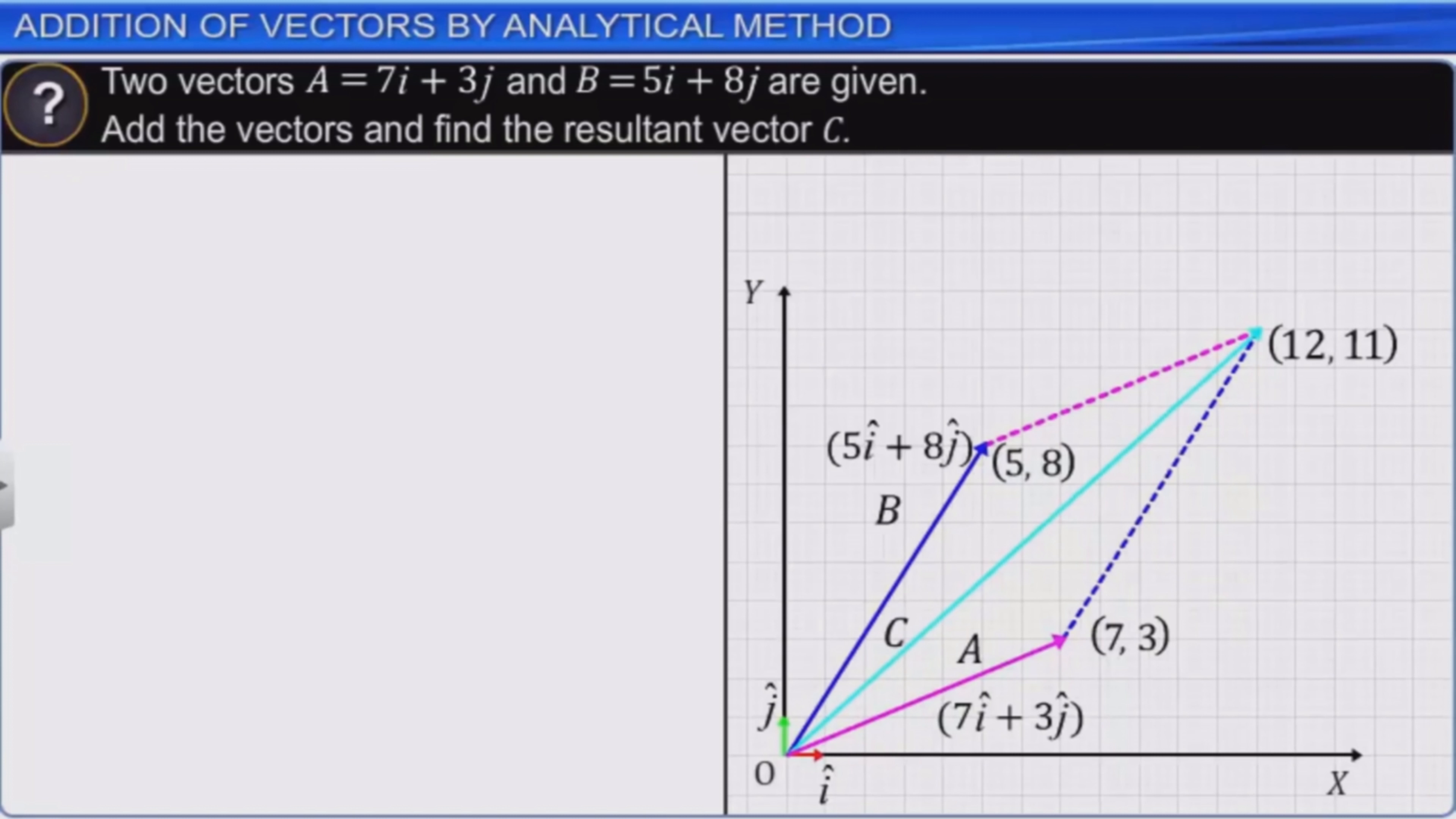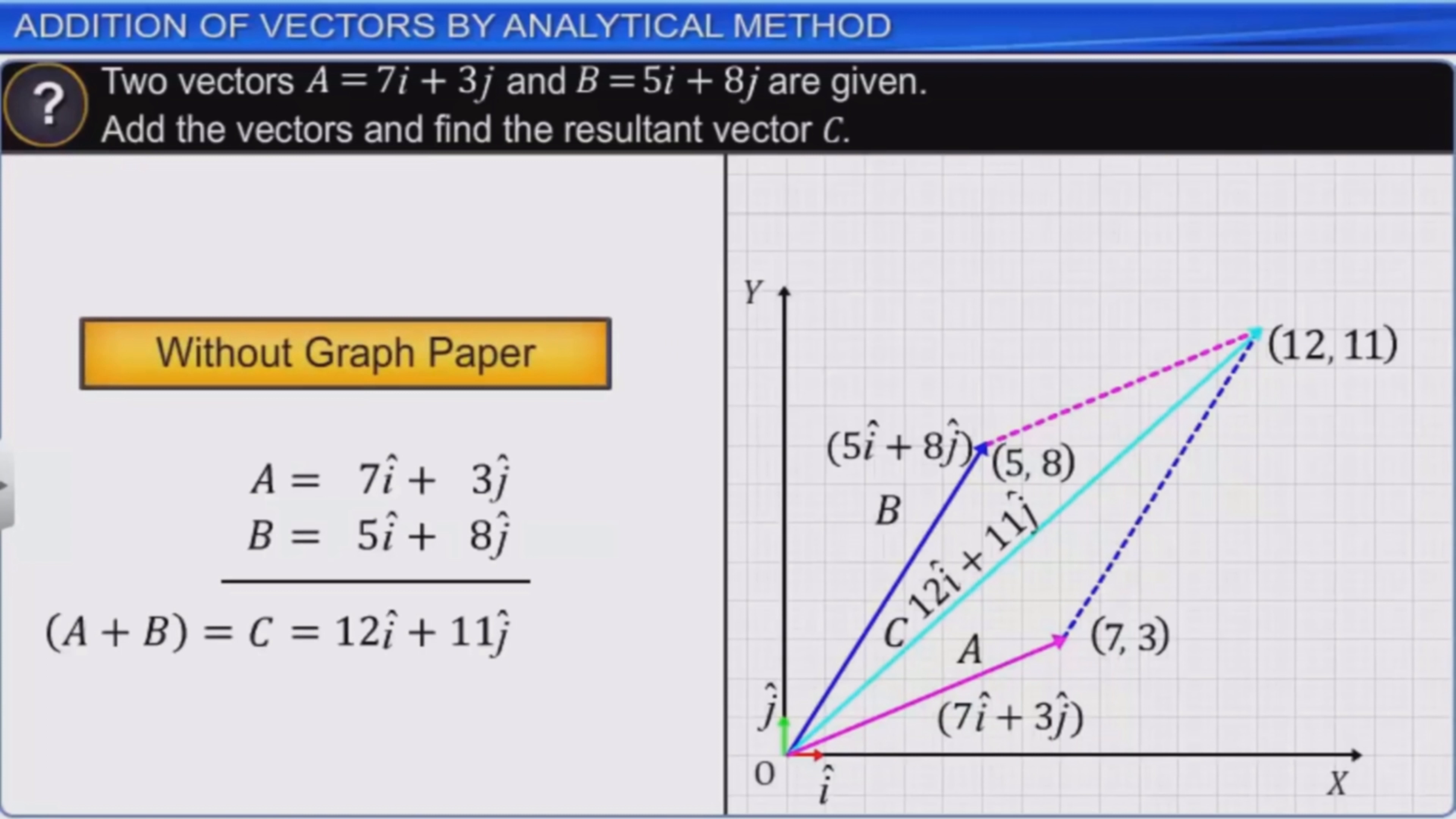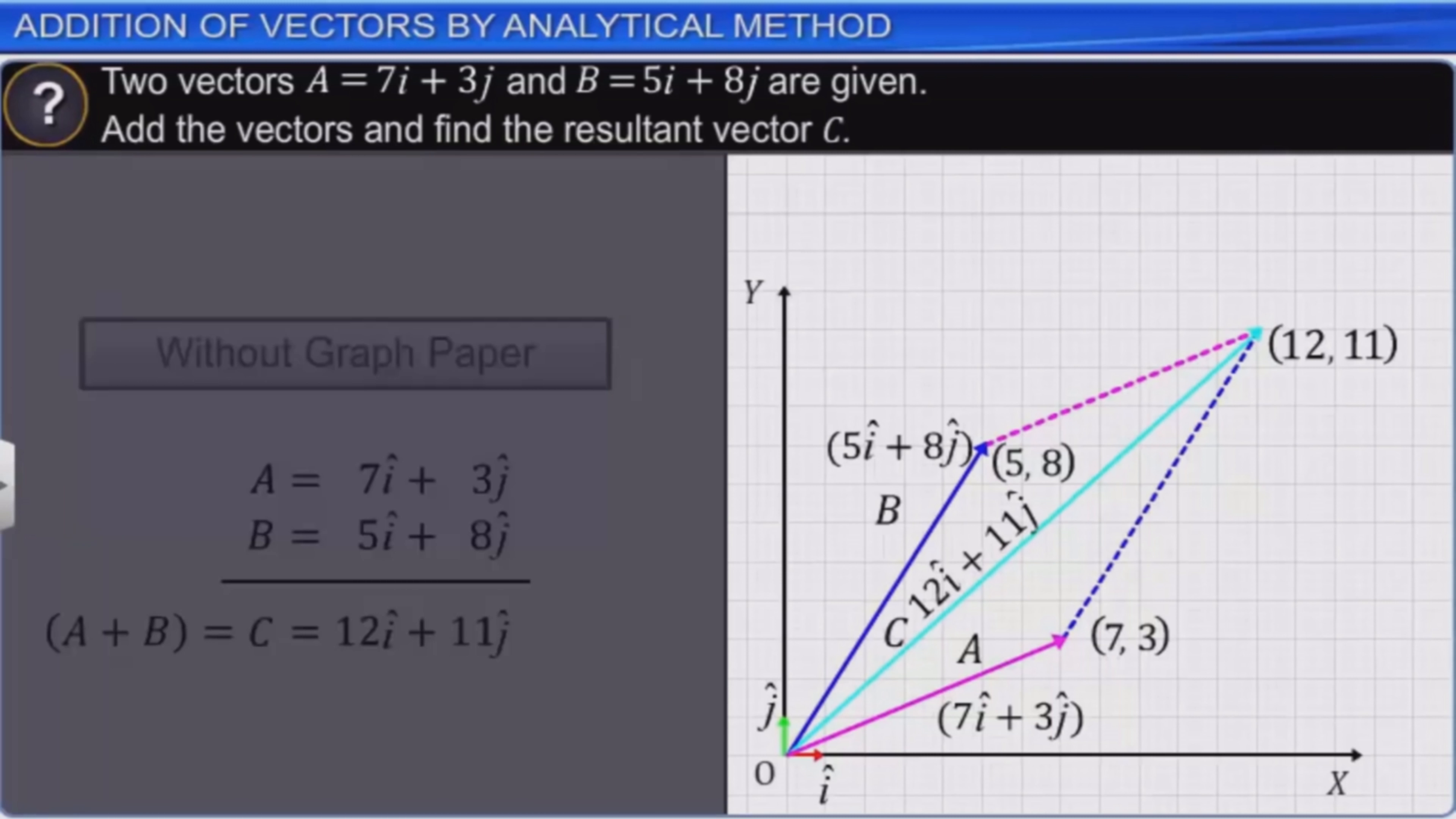Display an arrowhead at the end of this diagonal. This diagonal represents the required resultant vector C. Check the coordinates of the arrowhead point of C which should be 12, 11. You can also solve this problem without graph paper. You need to simply add the coefficients of i and j as shown here. Drawing the vectors on graph paper helps you visualize the procedure.